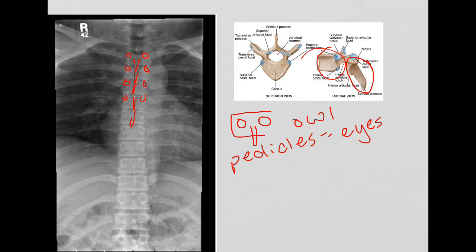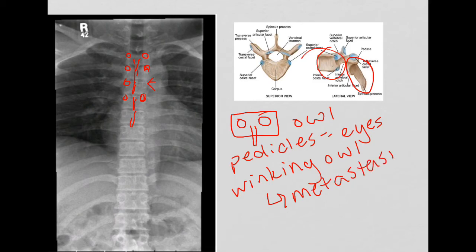So now we've got this cute little owl guy. You'll also notice in some patients, hopefully not many, but you may run across this from time to time, that a pedicle or an eye is missing. If you see this, this is often referred to as the winking owl. And this is an indication sometimes of metastasis along the spinal canal. Just a little fun side note.